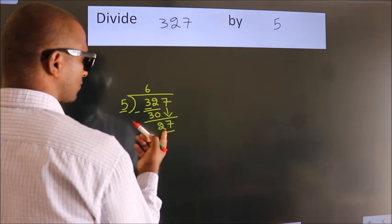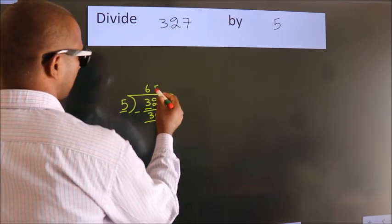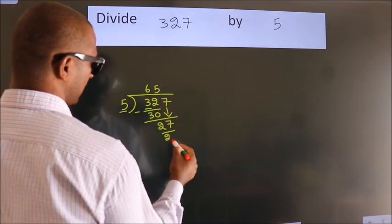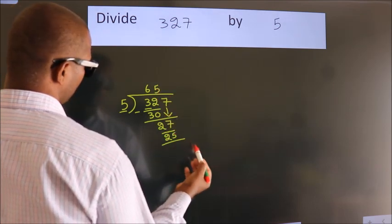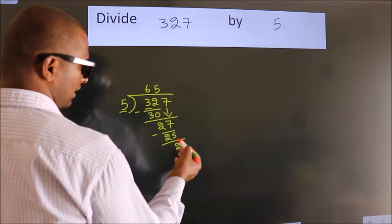A number close to 27 in the 5 table is 5 times 5, which is 25. Now we subtract. We get 2.